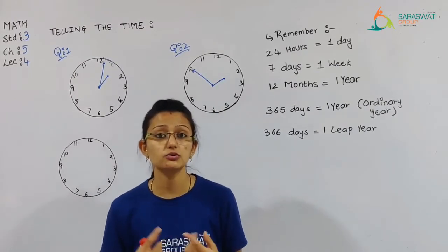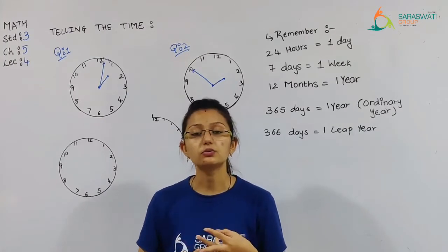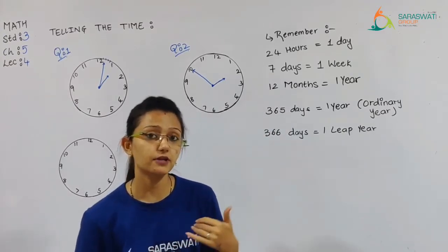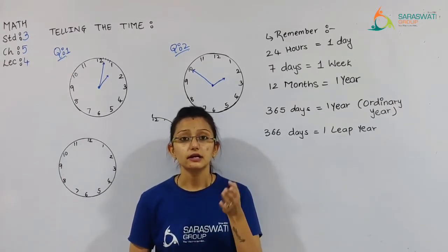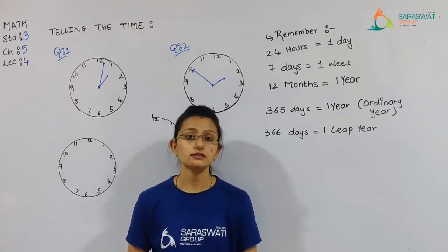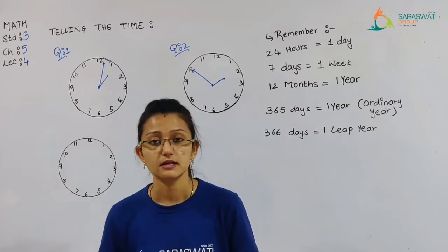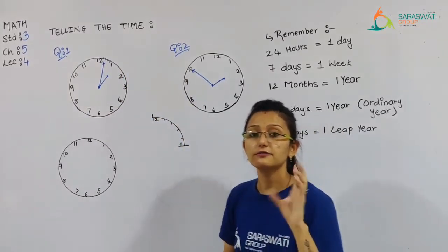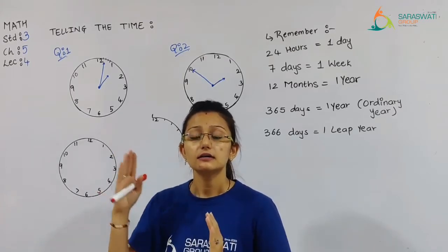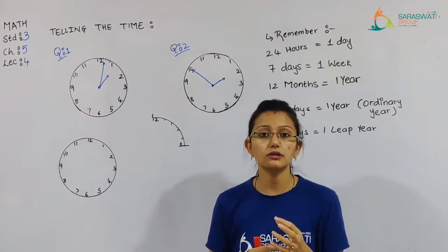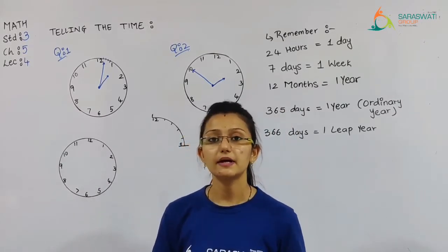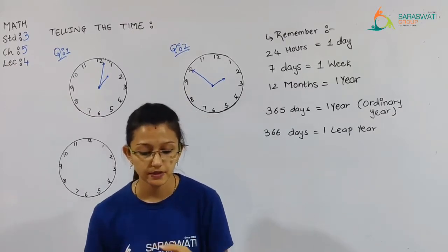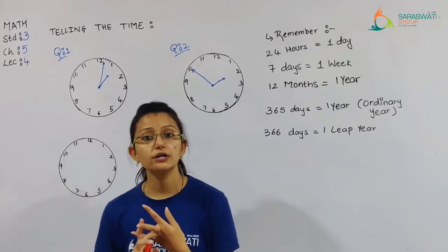In session number 2, we covered half past, quarter past, and quarter to — those three, moving in gaps of 15 minutes. Then in session number 3, we covered telling the time in 5 minutes — how 5-minute divisions are counted. Along with that, in lecture 2 we solved exercise 5.1 and in lecture 3 we solved exercise 5.2.